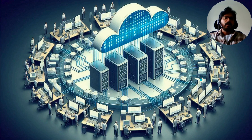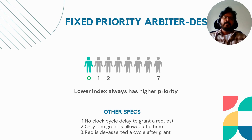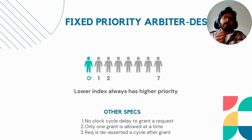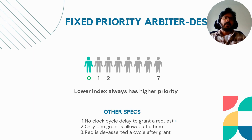Simulation is probably not the best approach to verify arbiters. If you take the example of a fixed priority arbiter, the priority arbitration is fixed. In the case we are going to discuss today, out of N requests — let's say N is 7 — request 0 always has the highest priority and 7 has the lowest priority. Some other assumptions we are considering: there are no clock cycle delays between request and grant. If a highest priority requester is requesting, then it gets a grant immediately. Second, only one grant is allowed at a time, so the output grant is a one-hot vector.